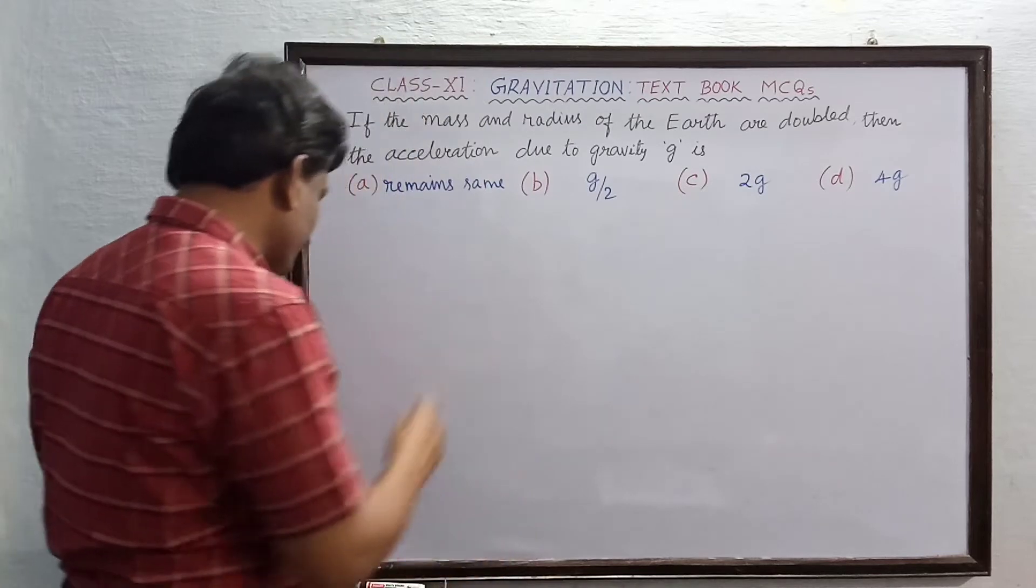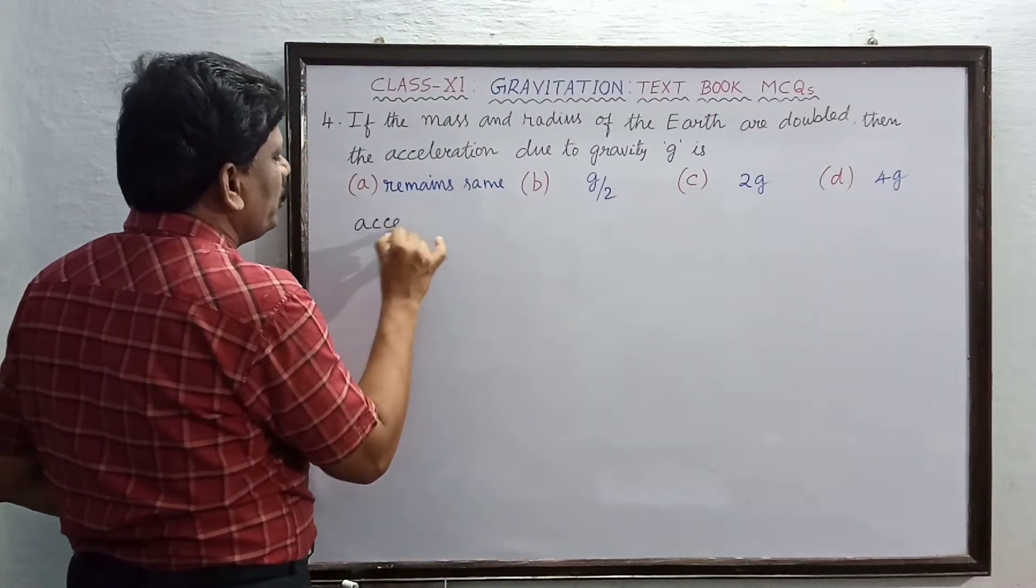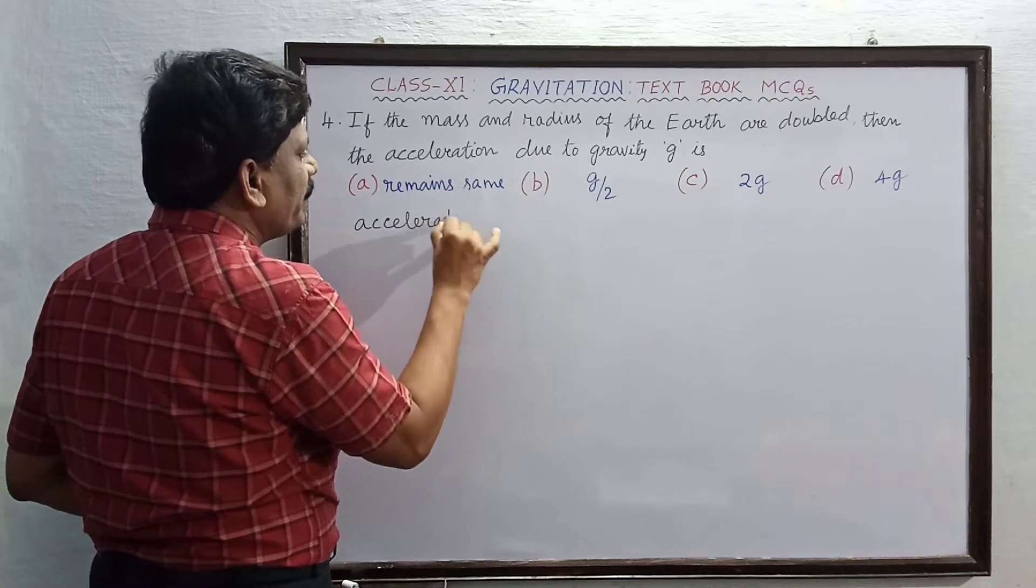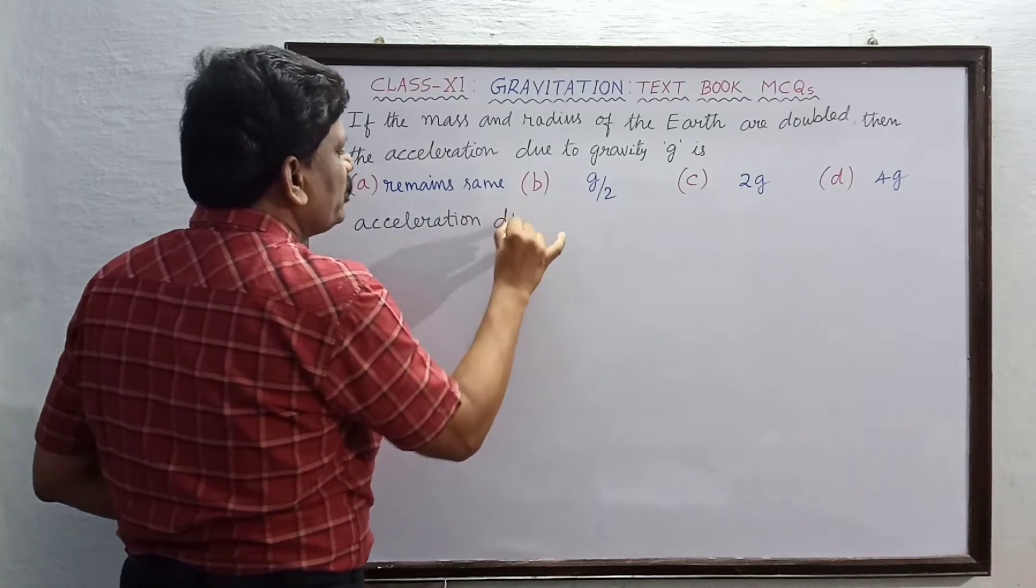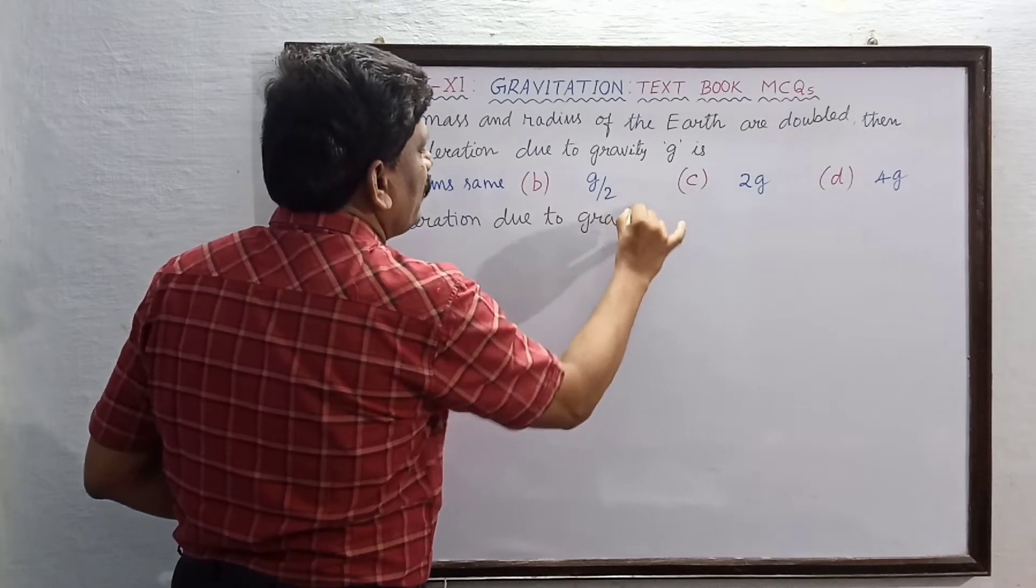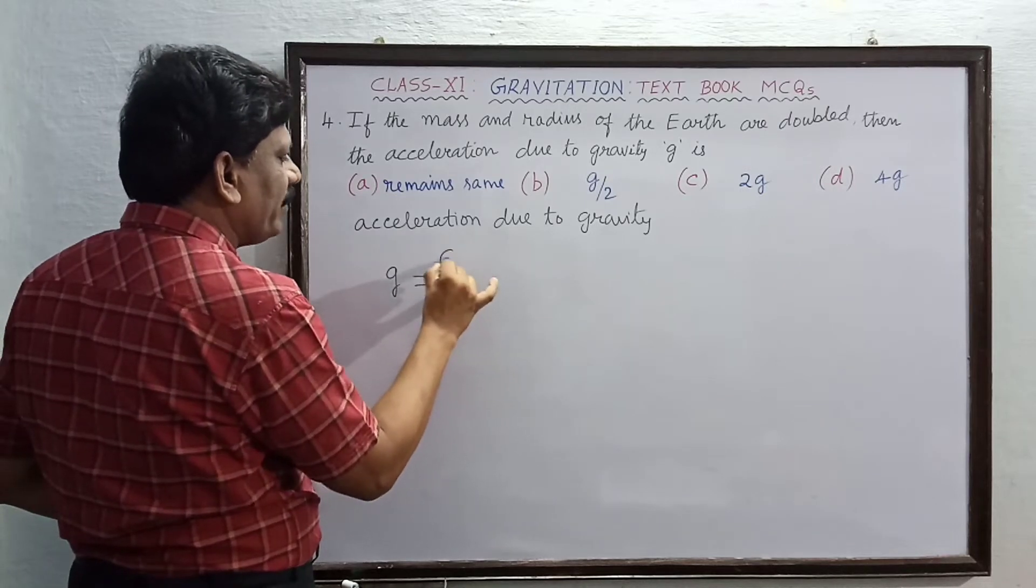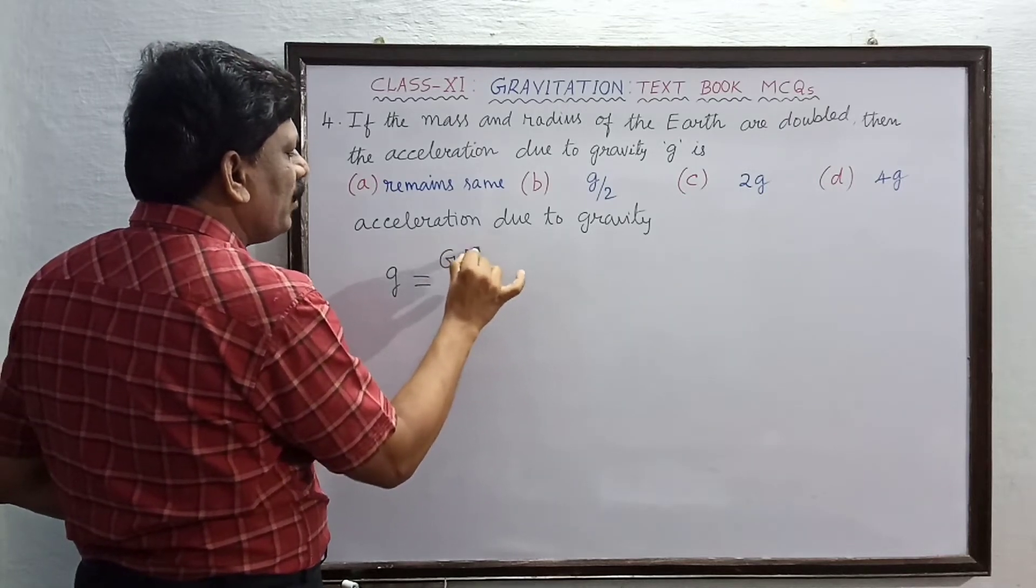So what is the expression for g we are going to find out? First of all, the expression for acceleration due to gravity we must remember. Acceleration due to gravity is given by g equals capital G into mass of the Earth divided by radius square.